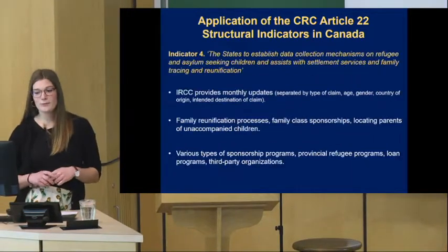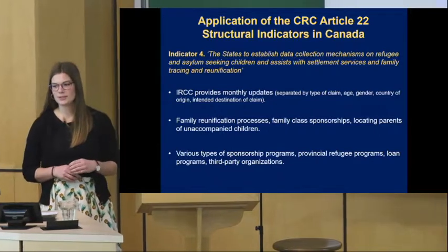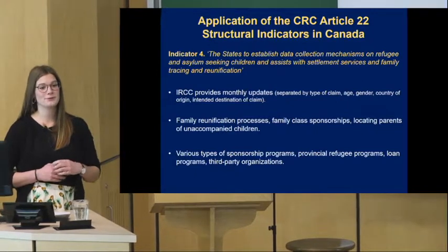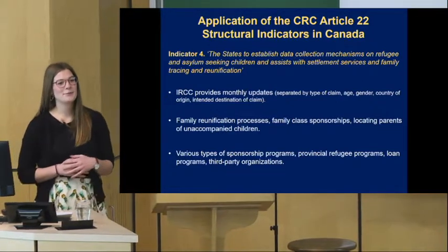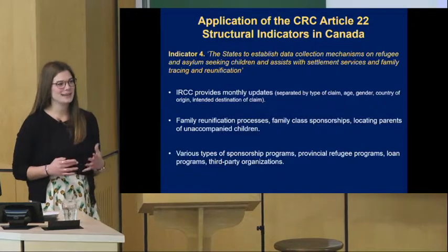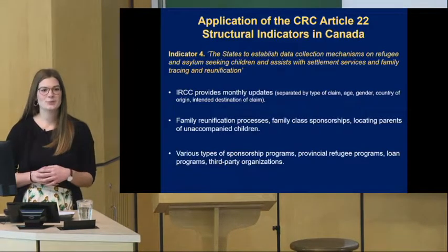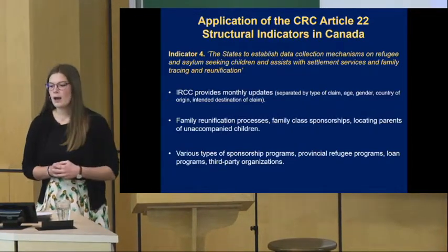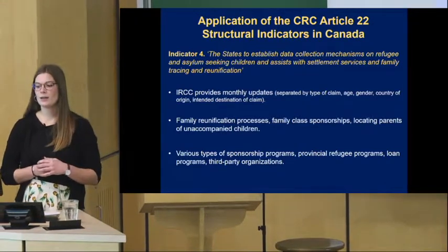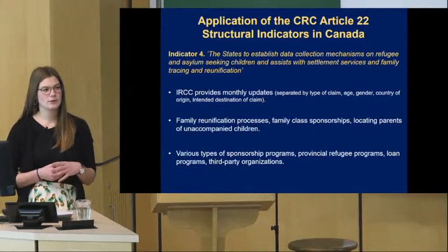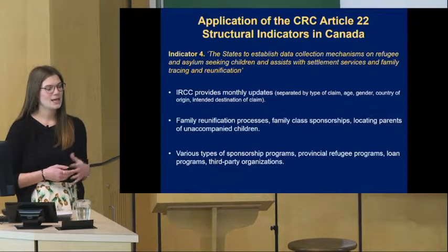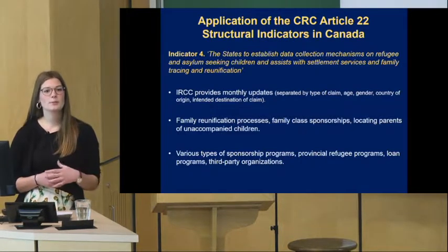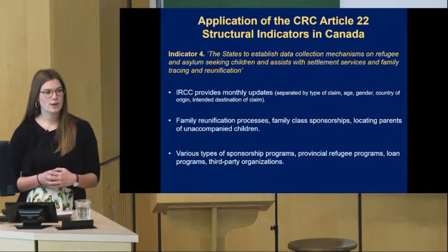Global Child Indicator 4 states that countries are to establish data collection mechanisms on refugee and asylum-seeking children and assist with settlement services and family tracing and reunification. The IRCC does provide monthly claims for asylum-seeking children. There are also various reunification processes in place to help locate parents of separated children, and depending on the sponsorship type, there are services for once they are resettled in Canada, including loan programs, provincial programs, as well as third-party organizations.